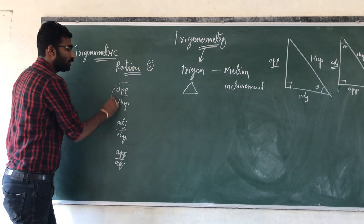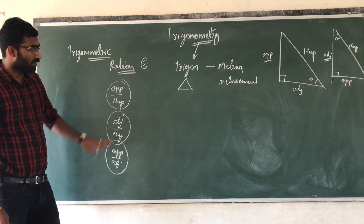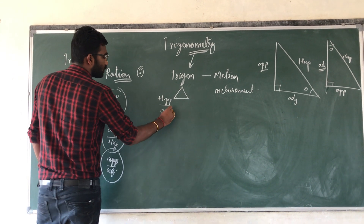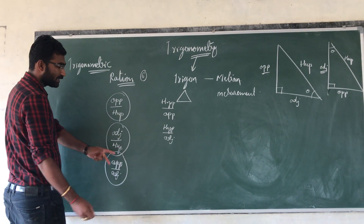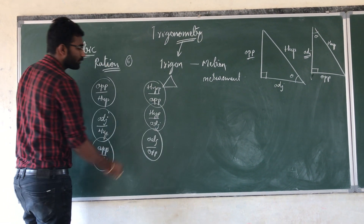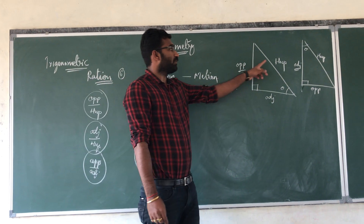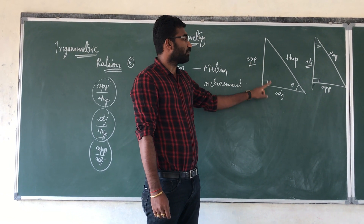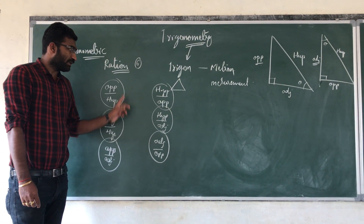The remaining three ratios will be exactly the reciprocals of these three. The first ratio is opposite by hypotenuse, second is adjacent by hypotenuse, and third is opposite by adjacent. The reciprocal of the first gives hypotenuse divided by opposite. The reciprocal of the second gives hypotenuse divided by adjacent. And the reciprocal of the third gives adjacent divided by opposite. So these are the six trigonometric ratios we are going to study in this chapter.